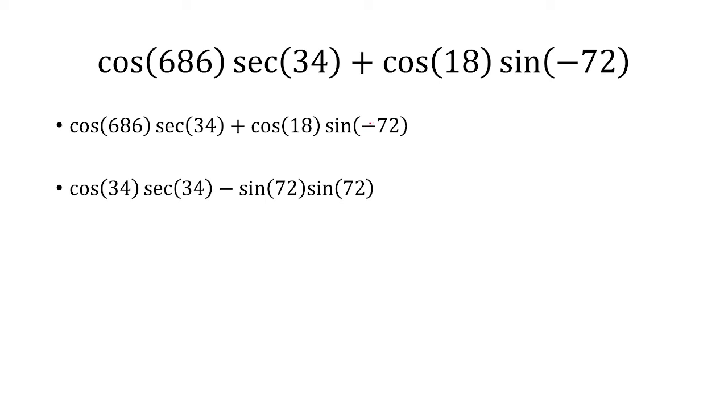Now sine of negative 72, we said the negative comes out in front. And we also said that cosine of 18 is equal to sine of 72.